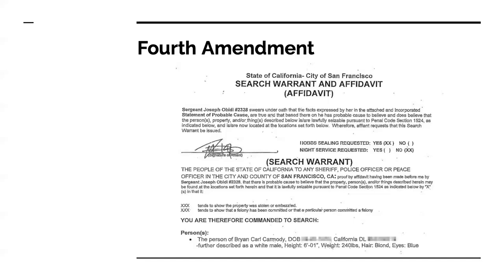Investigators must demonstrate probable cause — conditions under which law enforcement may obtain a warrant for search or arrest when it is evident that a crime has been committed. Warrants are specific to a particular crime and criminal investigation, and specific to a geographical location. For example, if a house borders two counties, two separate warrants are necessary to search the entire property. In one case, law enforcement was issued a warrant to search a house, but the suspect's computer was located in a shed in the back of the house, which was not in the warrant and thus not permitted to be seized.